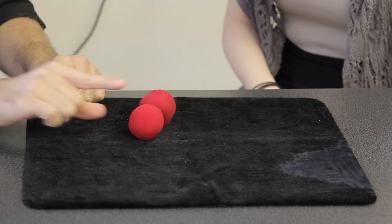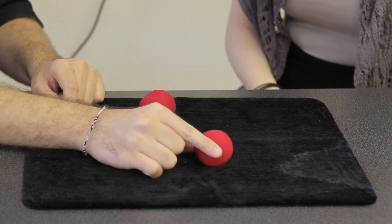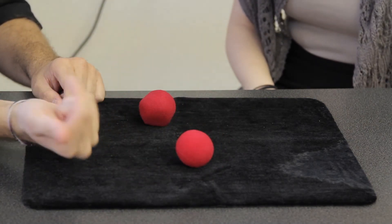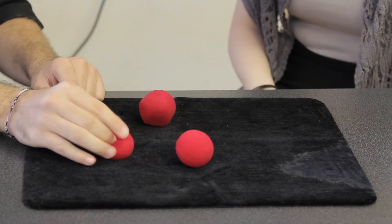Now what we're going to do is we're going to pick up the sponge ball with our two fingers and secretly add the second sponge ball. It's going to look like this.